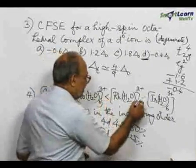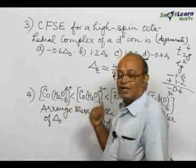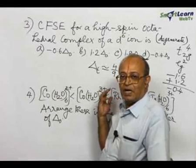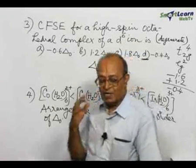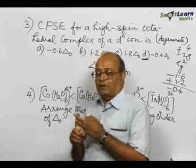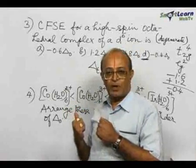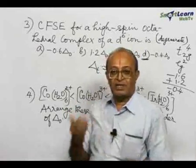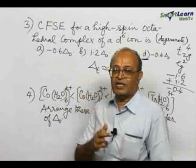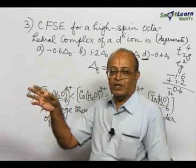So the increasing order of delta O for these four complexes can be written accordingly. You have to consider mainly three points: nature of the ligand, the position of the central element in the periodic table, and the nature of the charge. As the charge increases, delta O increases. From 3D to 4D to 5D, delta O also increases in that direction.